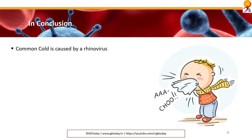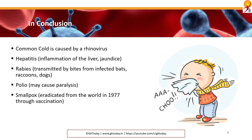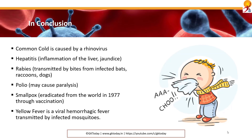In conclusion, let's revise. Common cold is caused by a rhinovirus. Hepatitis is inflammation of the liver or jaundice. Rabies is transmitted by bites from infected bats, raccoons and dogs. Polio may cause paralysis. Smallpox was eradicated from the world in 1977 through vaccination. Yellow fever is a viral hemorrhagic fever transmitted by infected mosquitoes.